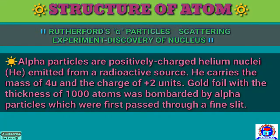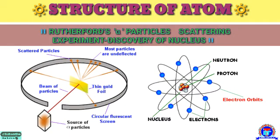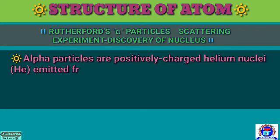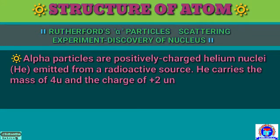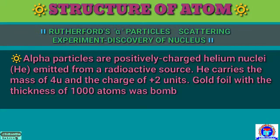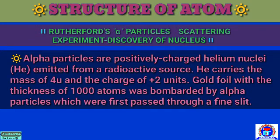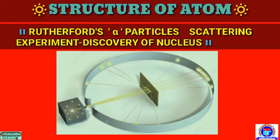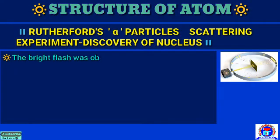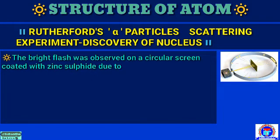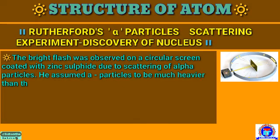The alpha particles are positively charged helium nuclei emitted from a radioactive source. Helium carries a mass of 4 units and a charge of plus 2 units. A gold foil with the thickness of 1000 atoms was bombarded by alpha particles which were first passed through a fine slit. A bright flash was observed on a circular screen coated with zinc sulphide due to the scattering of alpha particles.